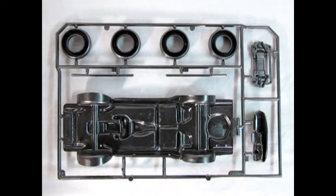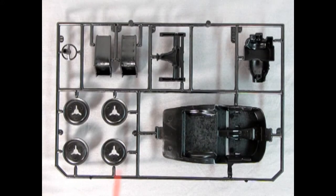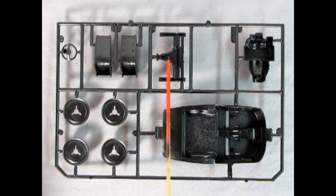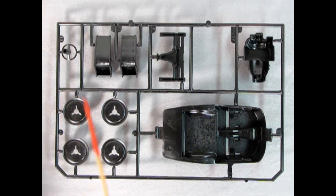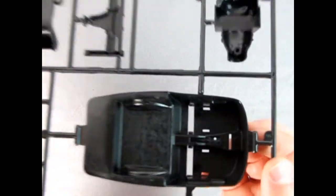Our next parts tree includes the interior bucket, the gigantic turbo motor, the rear axle and differential, our bucket seats, the steering wheel, and the wheel backs. So I know I have this sort of upside down, but we can take a better look at it.